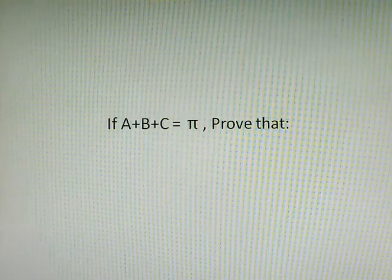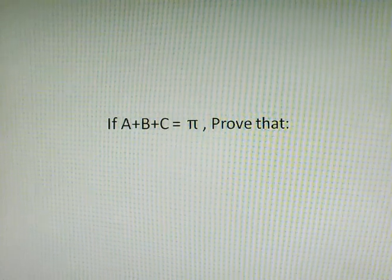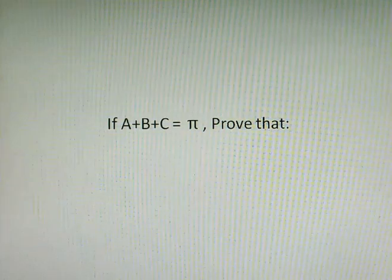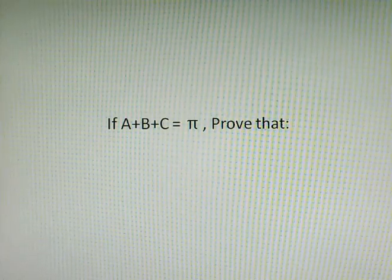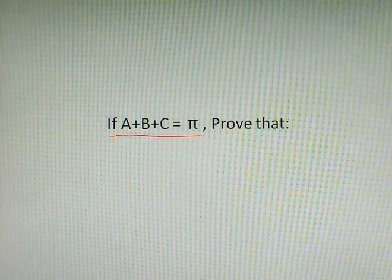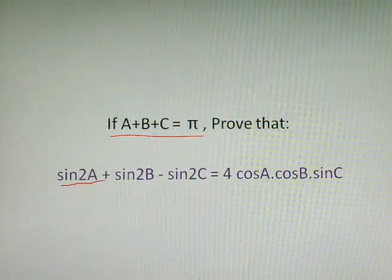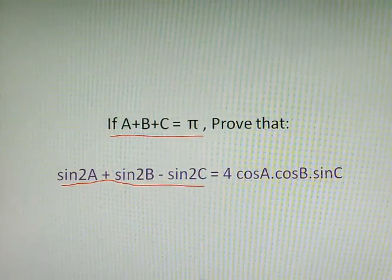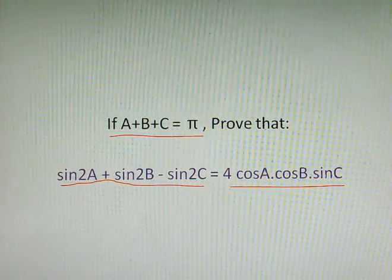Namaste, welcome all of you. Today I would like to continue with solutions related to conditional trigonometric identities. As you can see the condition on the screen: if A + B + C equals π, you need to prove sin2A + sin2B - sin2C equals 4cosA·cosB·sinC on the right side.